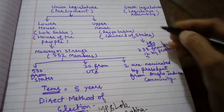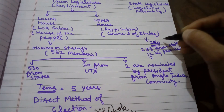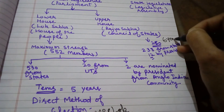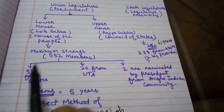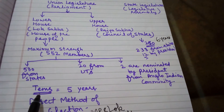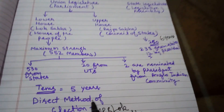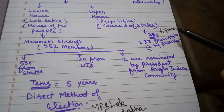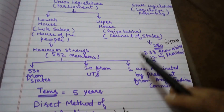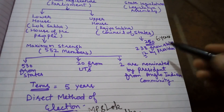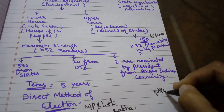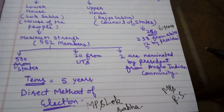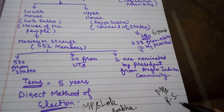The tenure of Rajya Sabha is six years. This is the main difference between both houses — the tenure of Lok Sabha is five years and the tenure of Rajya Sabha is six years. Members of Rajya Sabha are known as MPs (Rajya Sabha) and they are elected through the indirect method of election.